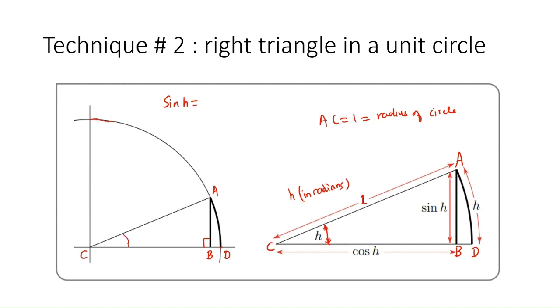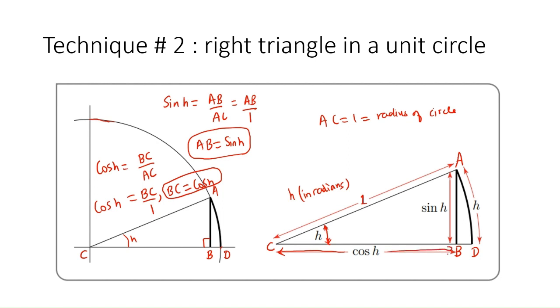Because if I use the definition of sin(H) and cos(H), sin(H) is AB over AC, which is equivalent to AB over one, so that means AB is sin(H). And if I use the definition of cos(H), cos(H) is BC over AC, which is BC over one, so that means BC is cos(H). So you get BC is cos(H) and AB is sin(H).